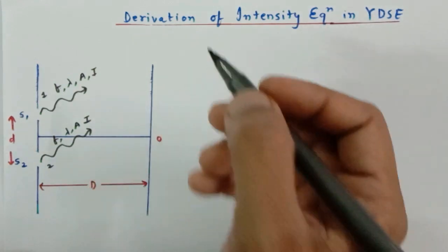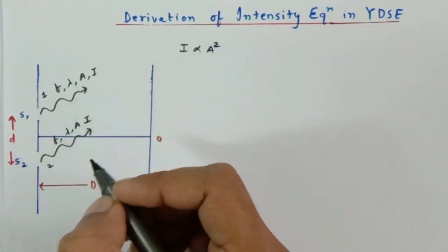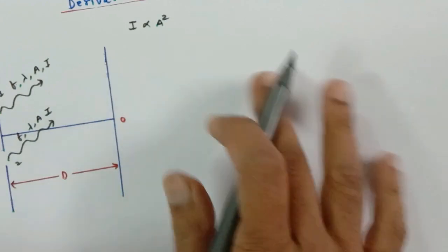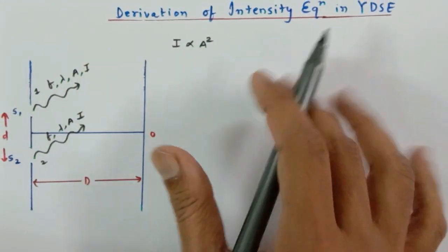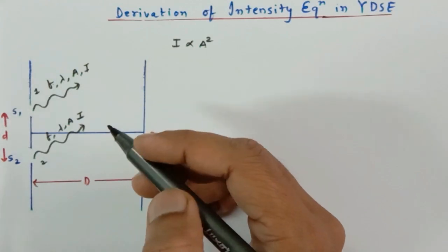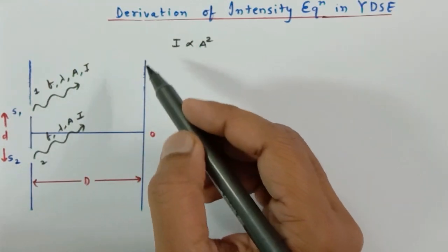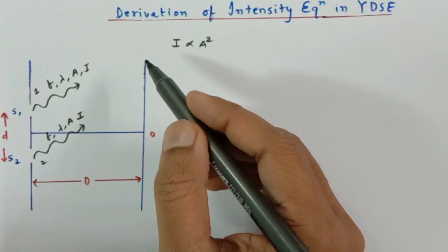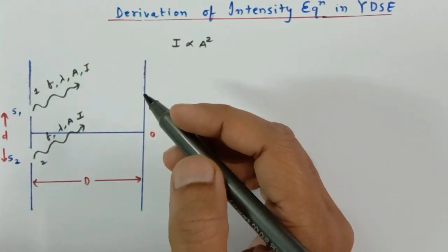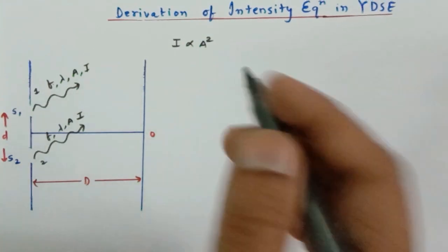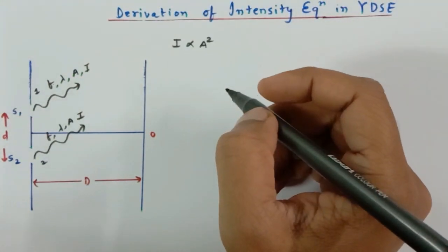We know that intensity is directly proportional to the square of amplitude. So the amplitude in both cases is the same, and therefore the intensity of both waves would be the same. Now these two waves would be falling on the screen and superposing with one another, so while superposition is taking place, their amplitudes are going to get added up.